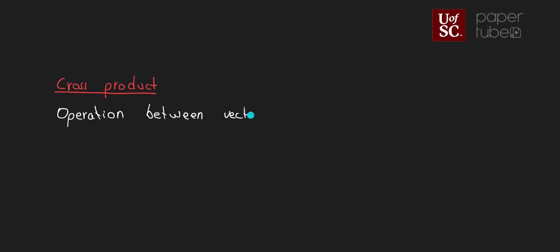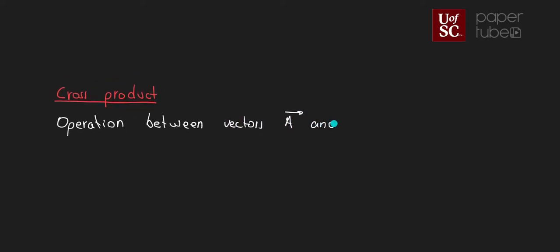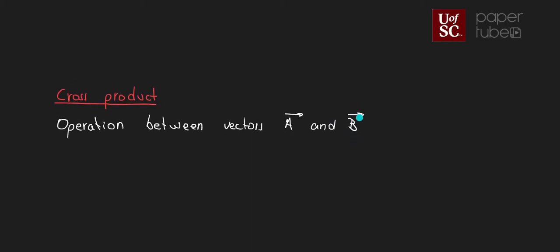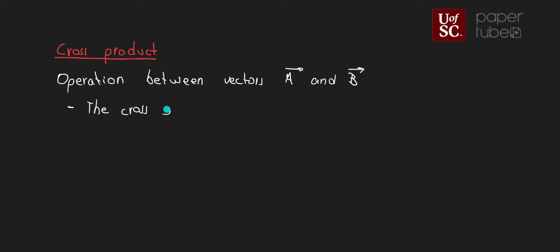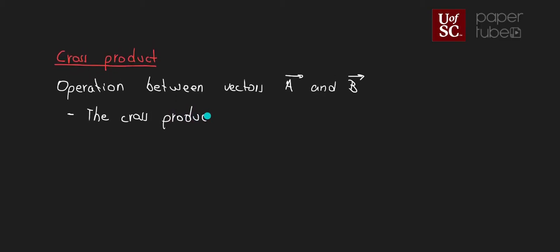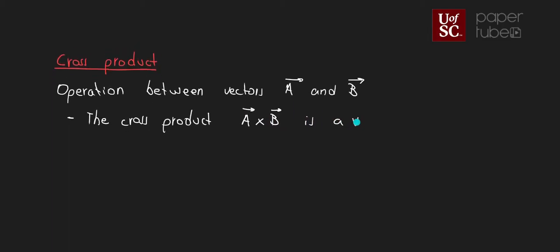Now, let's say we have vectors A and B, and what we see is that the resultant of this cross product is going to be another vector. So, the cross product A cross B is a vector.